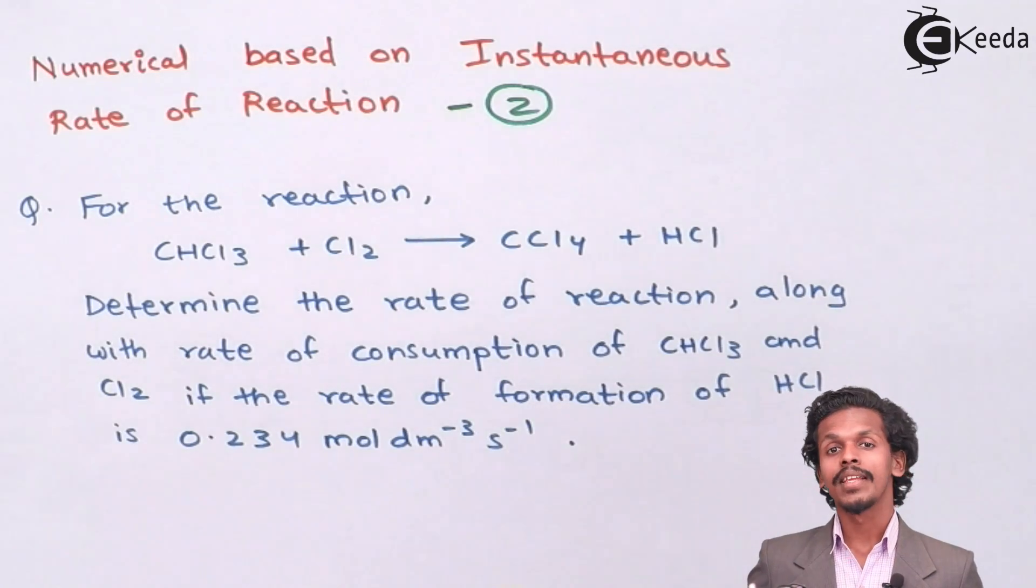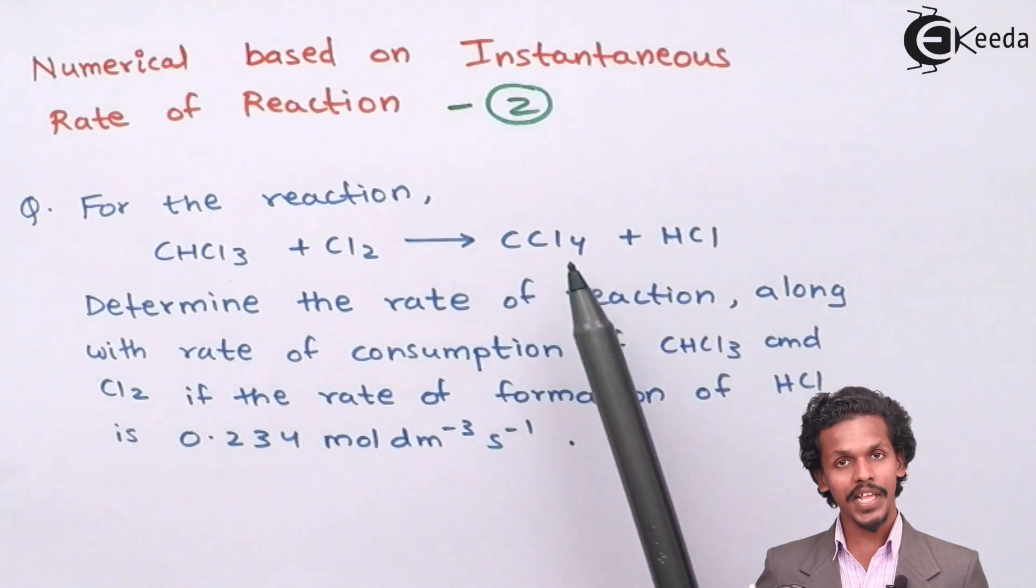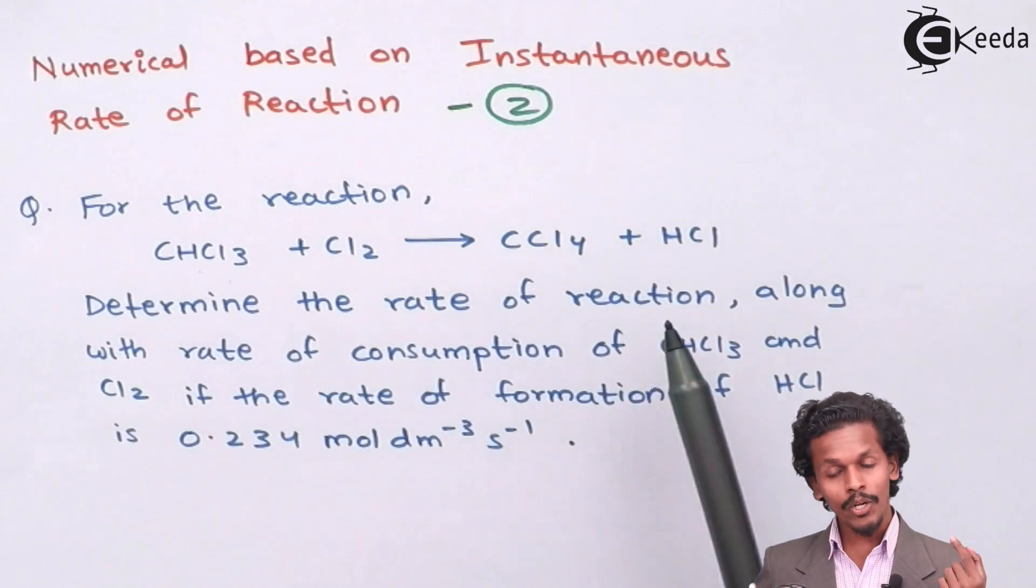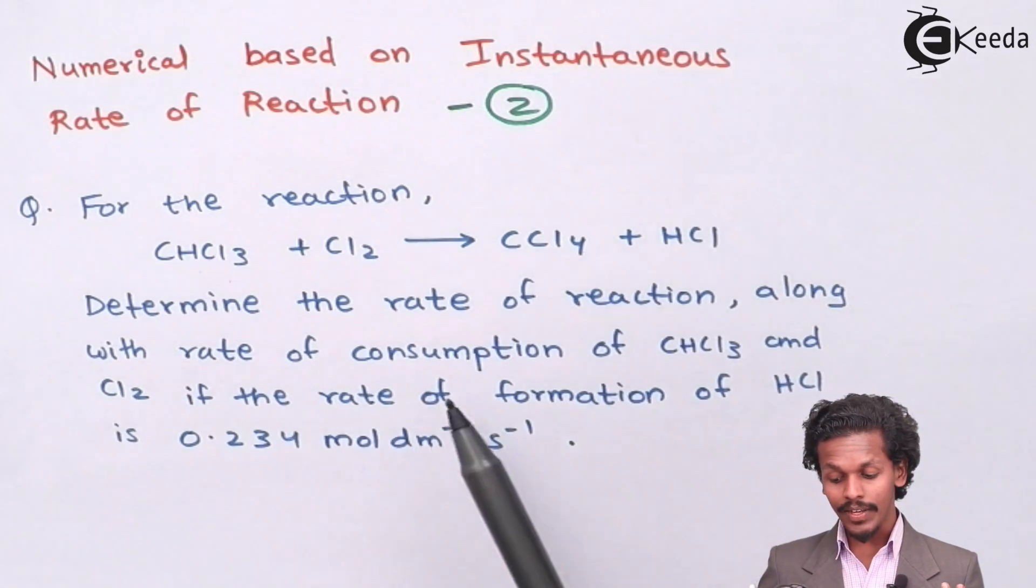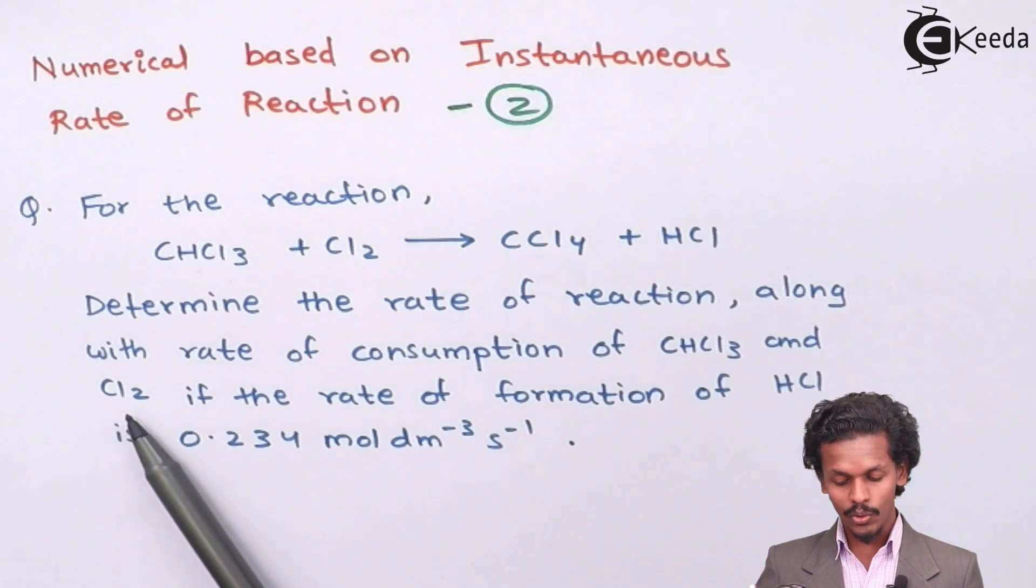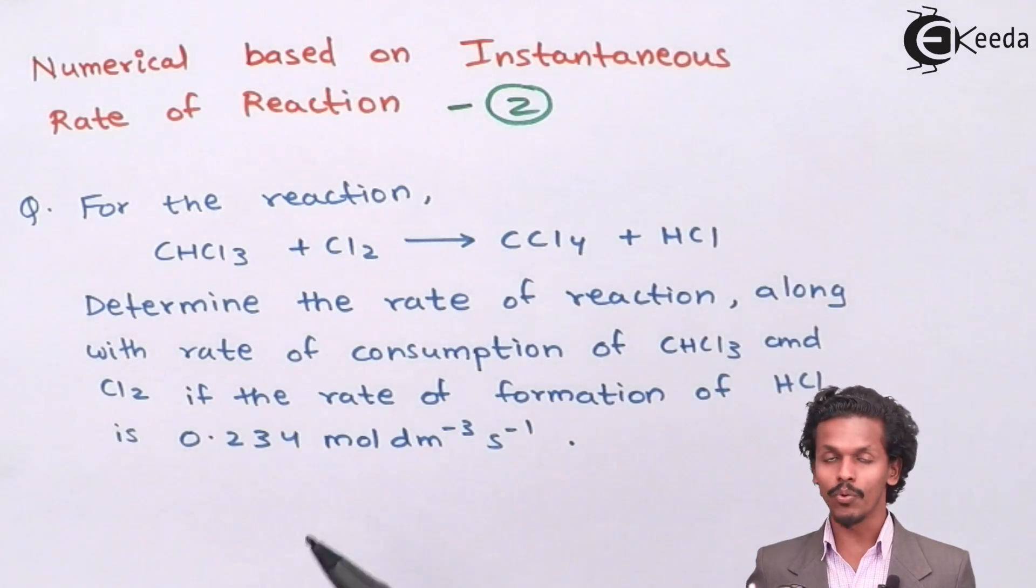As on your screen, it's a question mentioned that chloroform plus Cl2 will give you CCl4 plus HCl. In this thing we have to determine the rate of reaction along with the rate of consumption of chloroform and the rate of consumption of Cl2 if the rate of formation of HCl is given as 0.234.